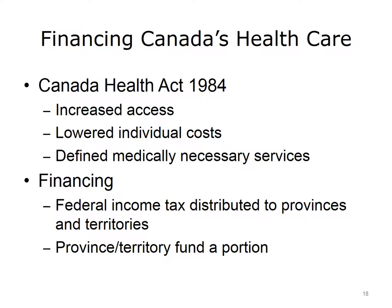The Canada Health Act, passed in 1984, was designed to increase access to and limit costs for health care. It set national health care criteria such as universal access to government-paid medically necessary services for everyone. Provinces and territories are required to follow specific guidelines. Today, provinces and territories receive income tax money from the federal government to pay for approximately half of their health care expenditures. The amount of federal money each region receives depends on its population, with low-population provinces receiving additional federal funds. The provinces and territories must provide the balance of the financing for necessary services. Some provinces and territories supplement health care funding through sources such as lotteries, sales taxes, or health care premiums. Patients who cannot afford the premiums still have the right to receive health care.